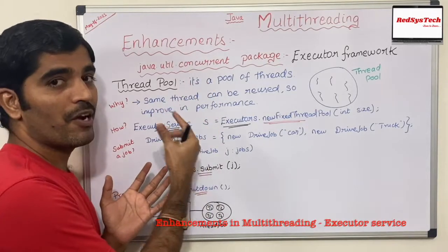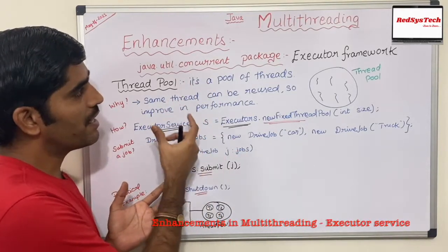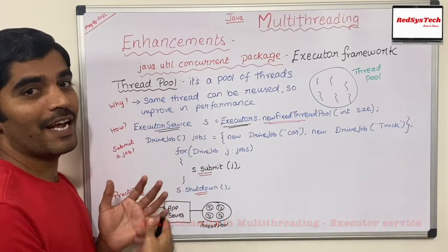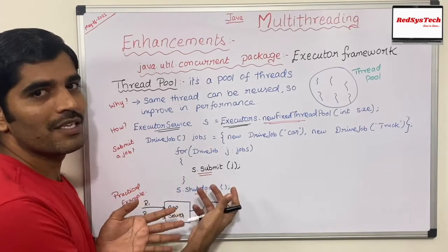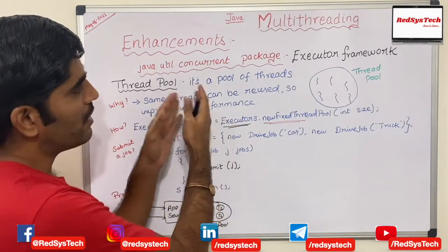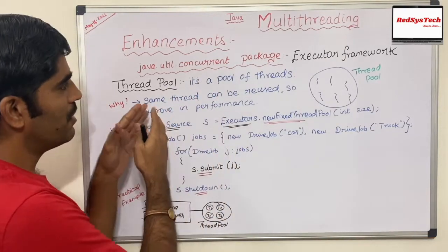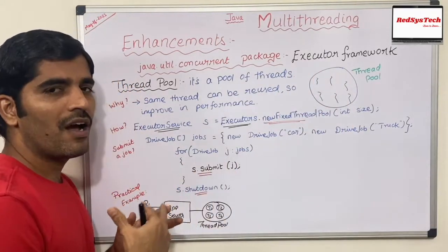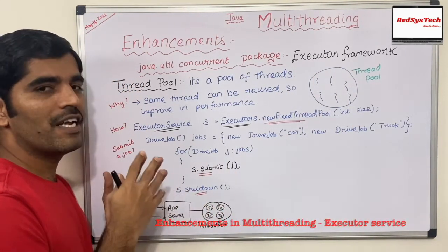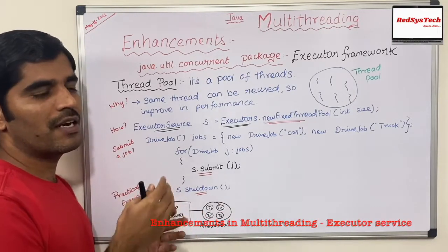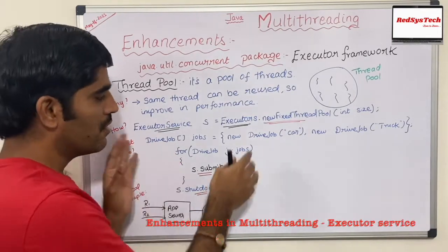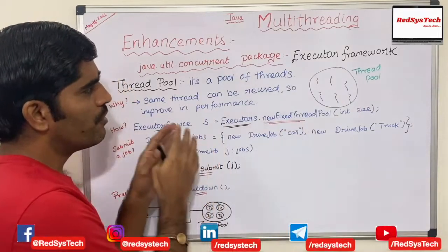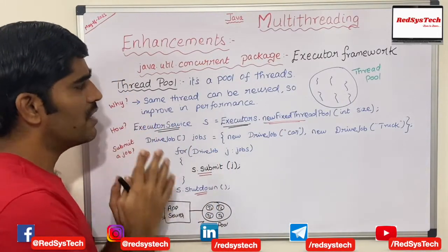The concurrent package has been developed by the Oracle developers team with the purpose of implementing many features so that developers can easily use the functionalities. One of those features is the concurrent package. Under the concurrent package we have a thread pool concept, which we basically call the Executor Framework — this is how we are going to execute particular threads whenever we deal with multiple threads.